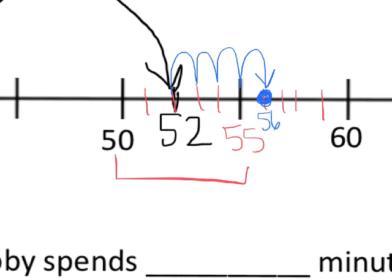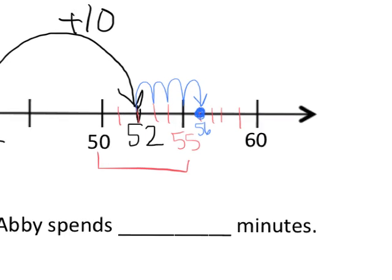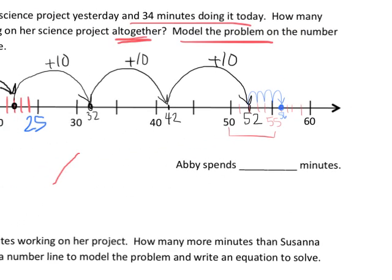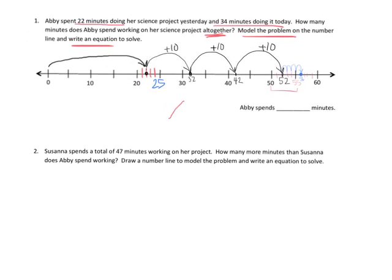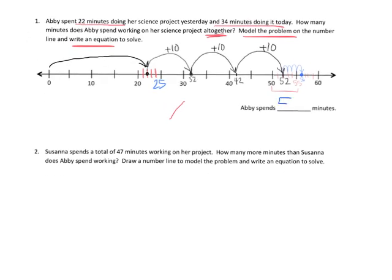All right, so I'm going to zoom out and I know that the answer—Abby has spent a total of 56 minutes. Is that the only way we could have solved this problem? No way. We could have written an equation and been a whole lot more efficient, which was 22 plus 34. You add them together and you get 56 minutes.